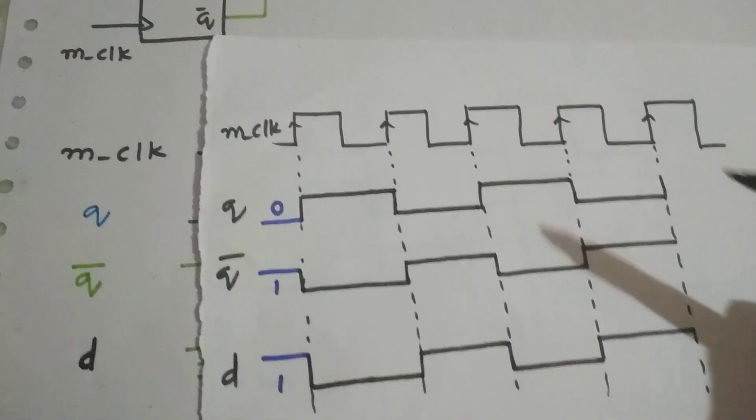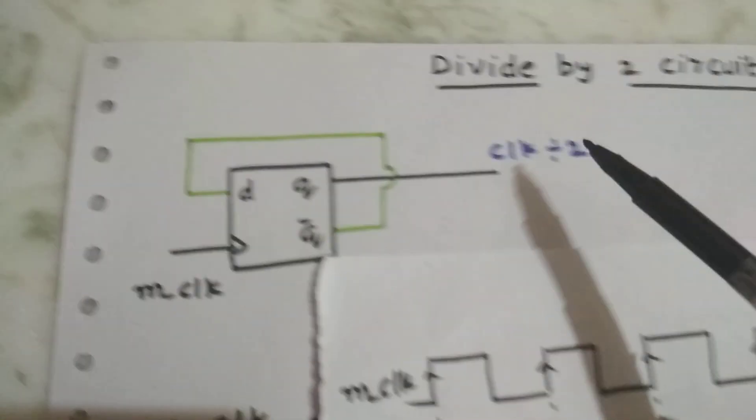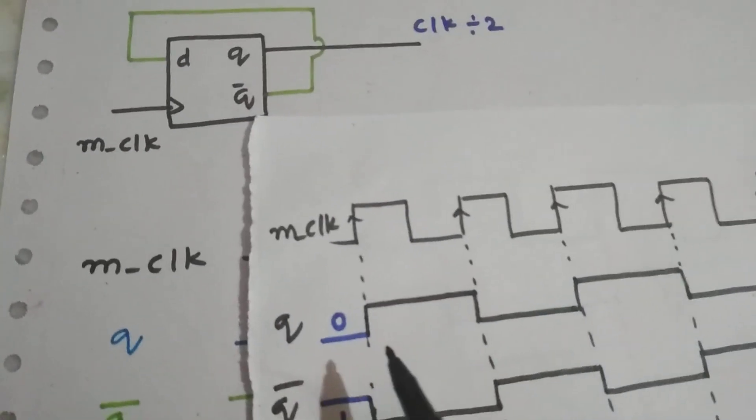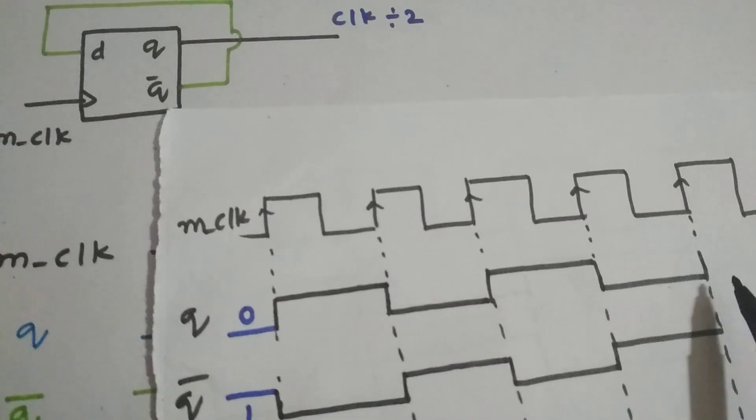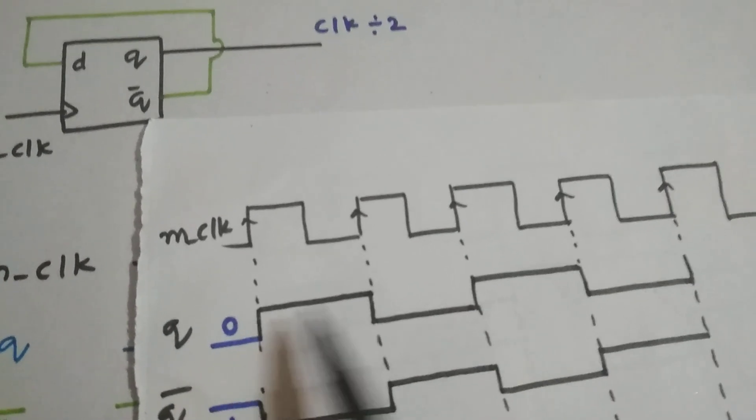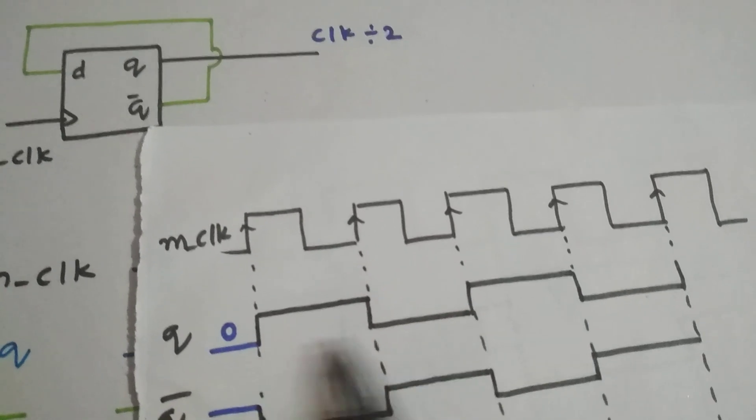As you can see, we are taking the output clock divided by 2 at Q. So what we get is the Q value. As you can see, the Q is starting from this positive edge to this positive edge. This is one time period.